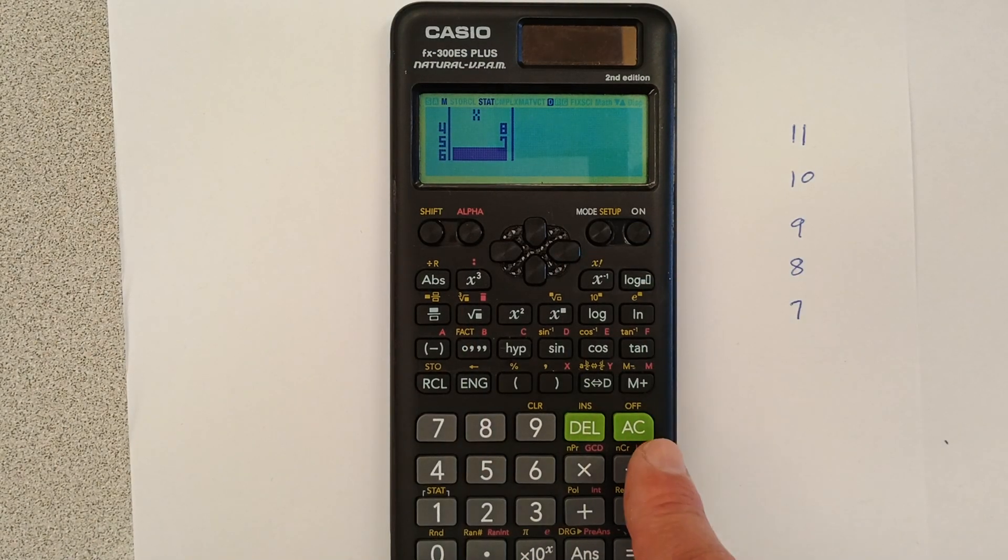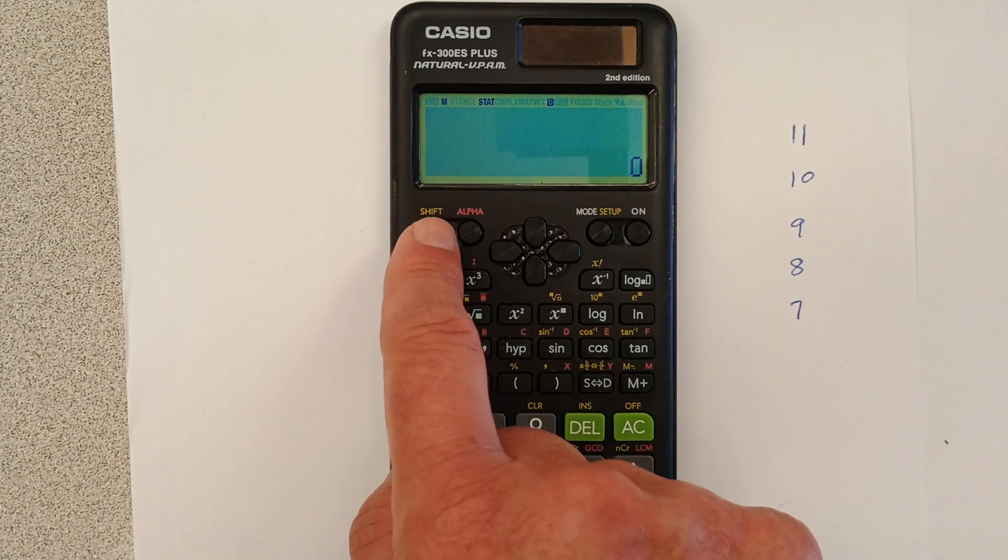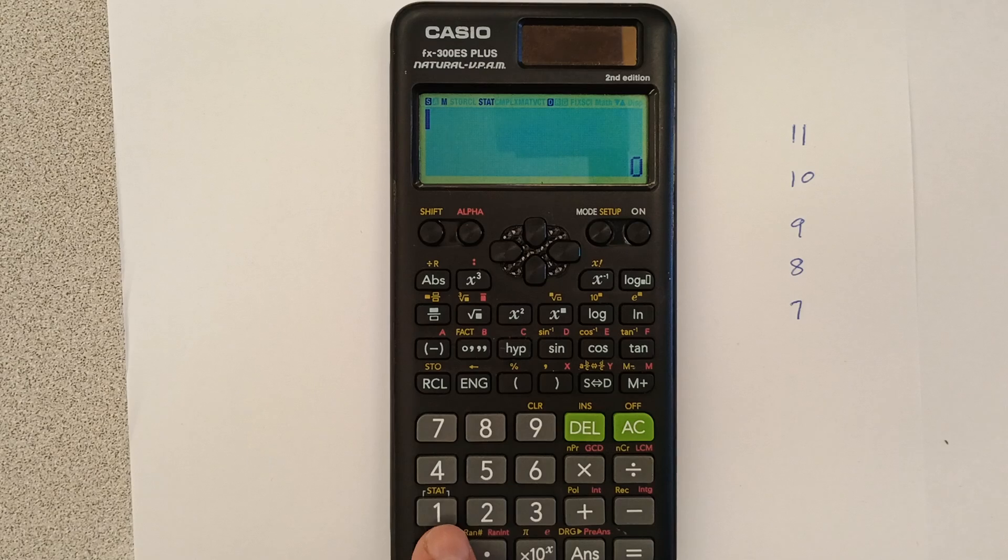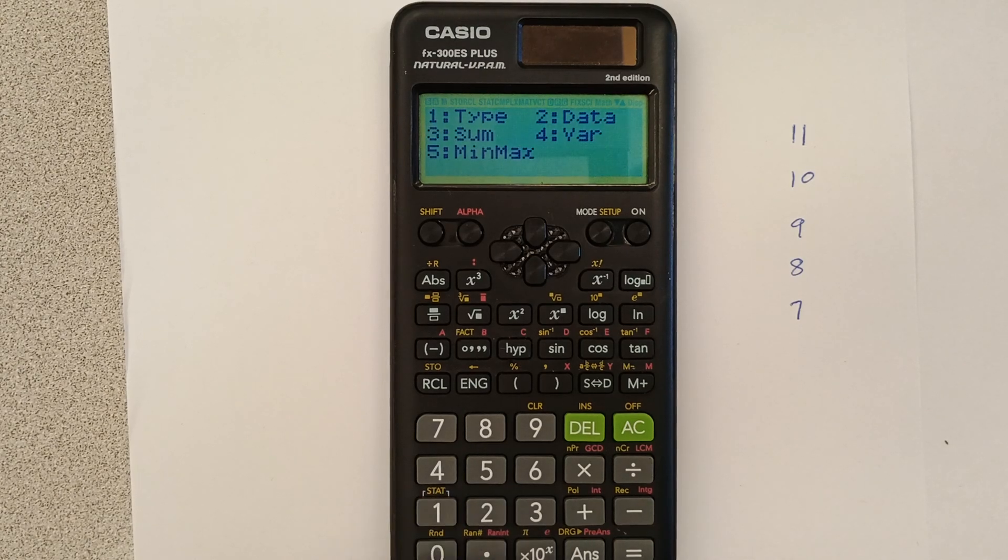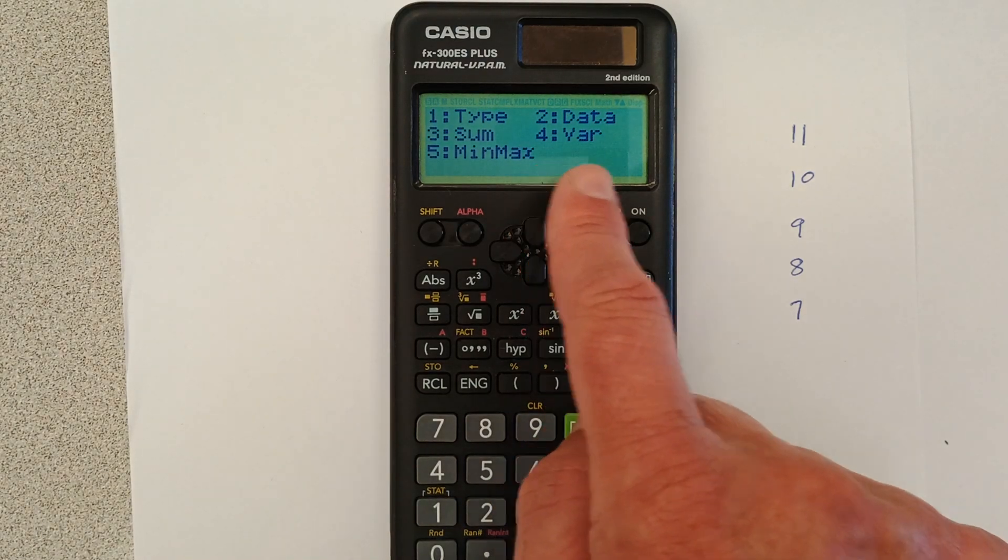Now we have our data set. We go to AC or to clear. Okay, now we go shift and down to the number one, their stat. And we're going to do four. That's for our vary.